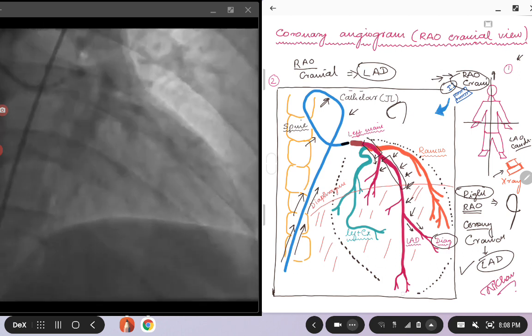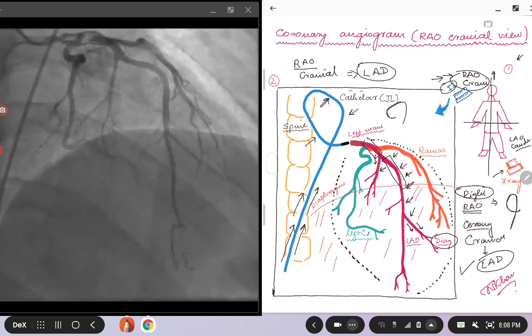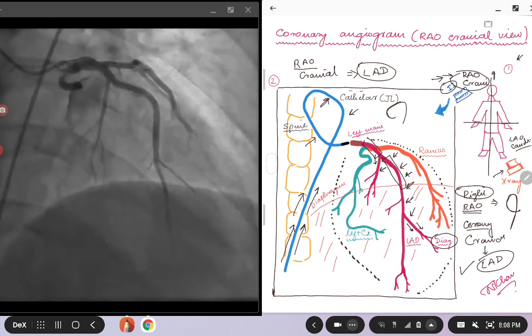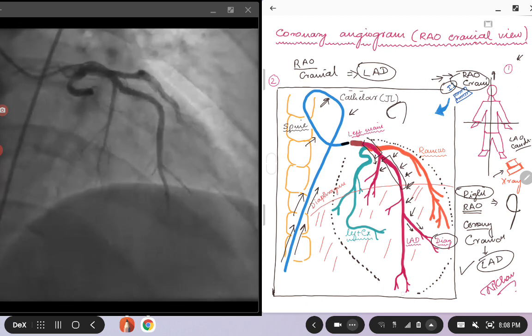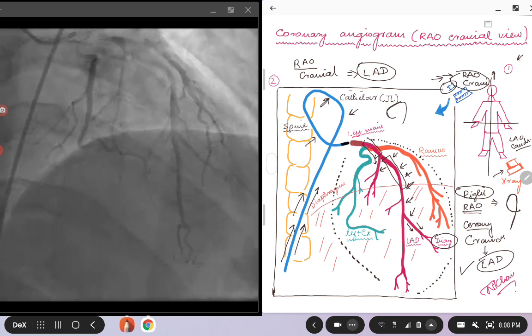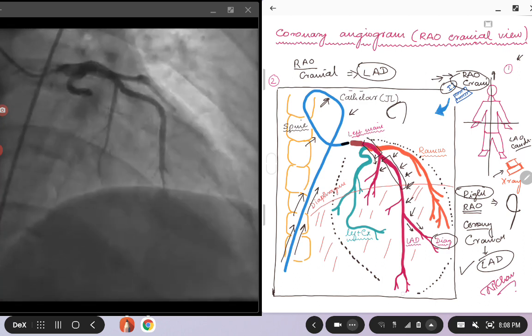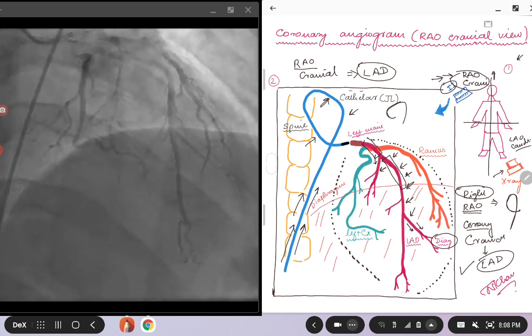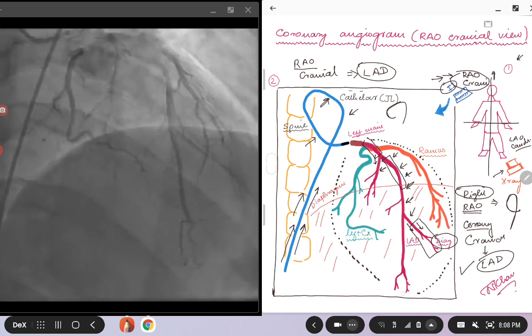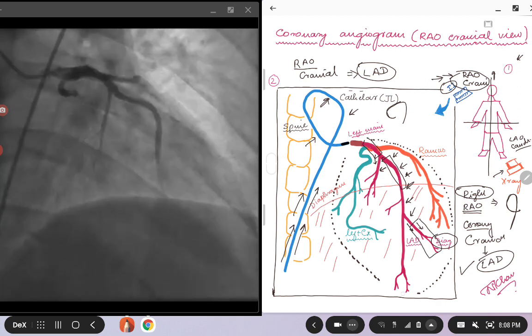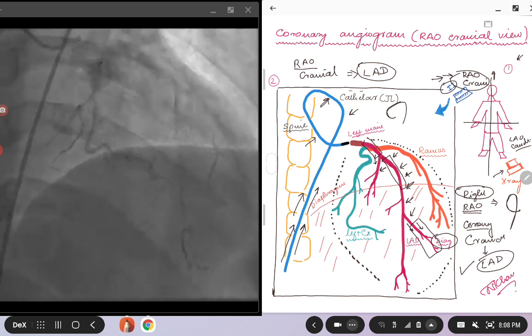This is the same patient that we discussed in the LAO caudal view and the RAO caudal view. If you go back and look at those cine images, you will see that you will not be able to look or appreciate the diagonal branch coming off from the LAD. But in this view, you can see it very nicely and you can see if there is any stenosis or any disease in that diagonal branch.